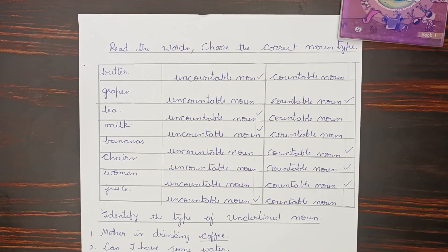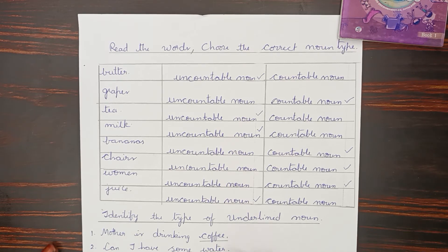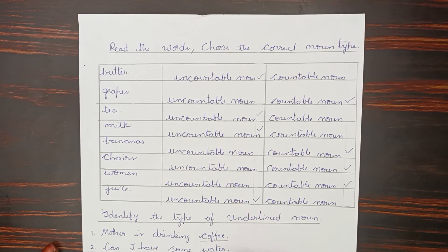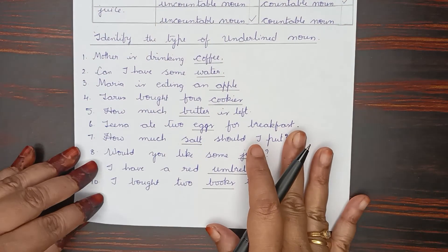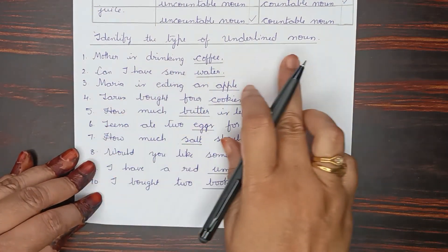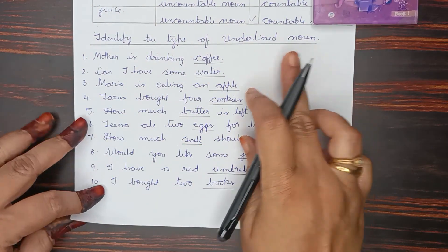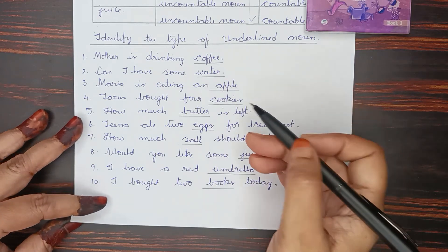Now, one more activity. Identify the type of underlined noun. Coffee — you underline and identify it here. Identify the type of underlined noun.